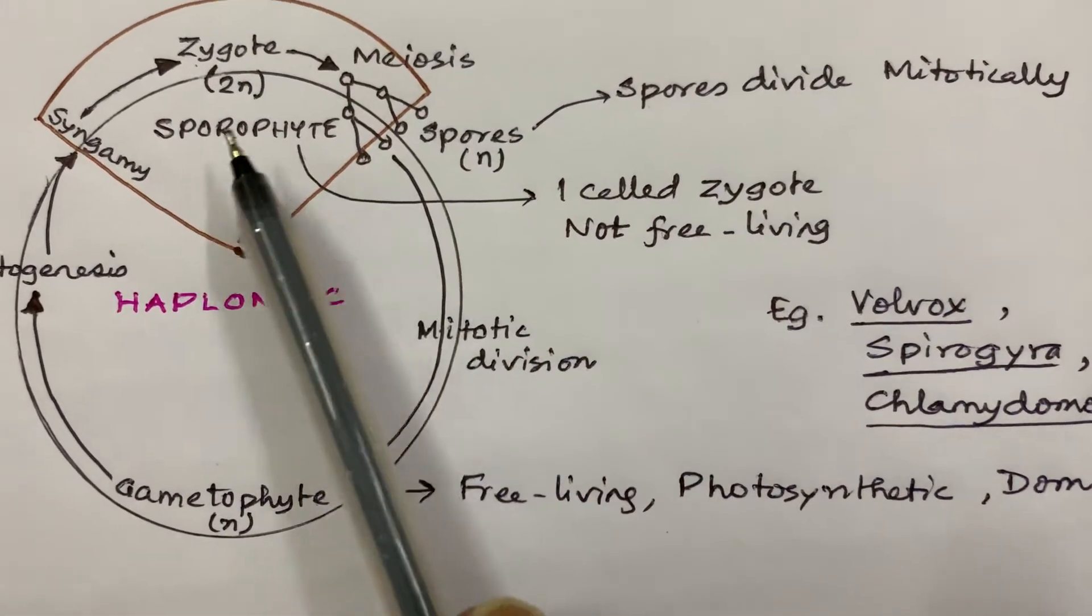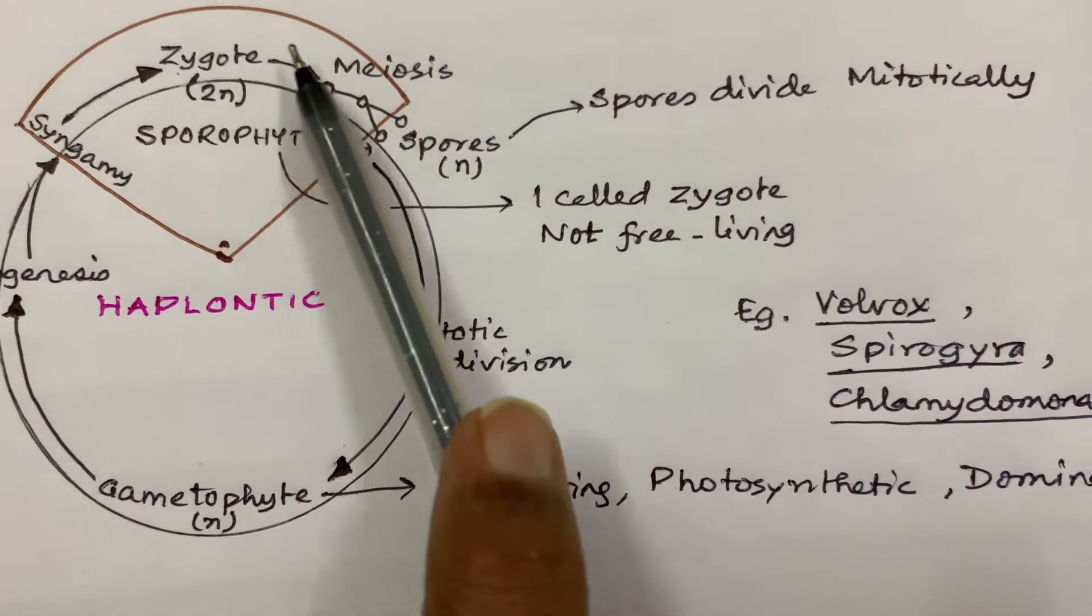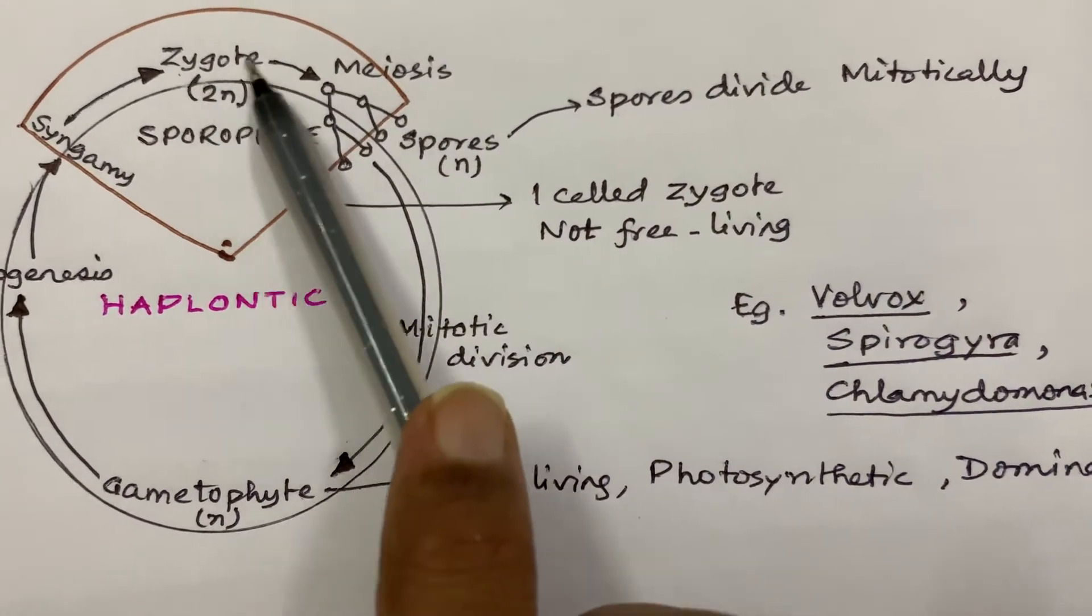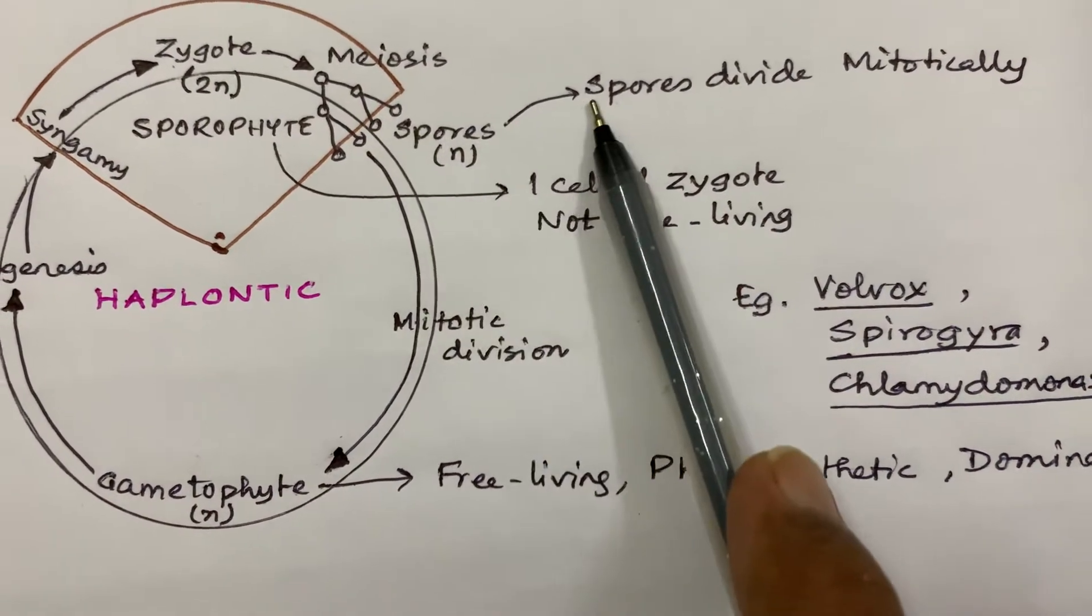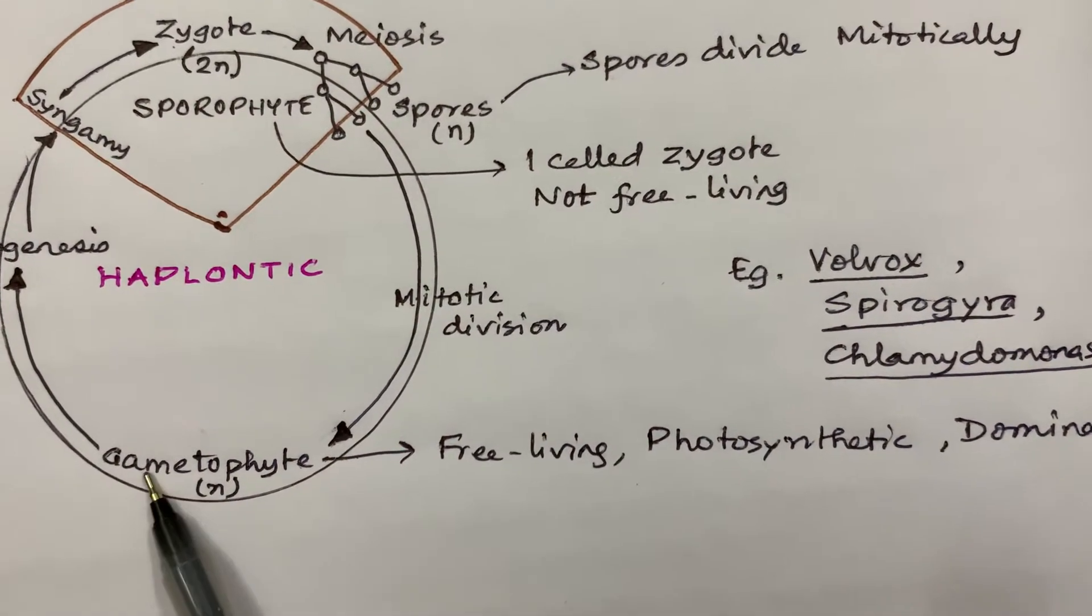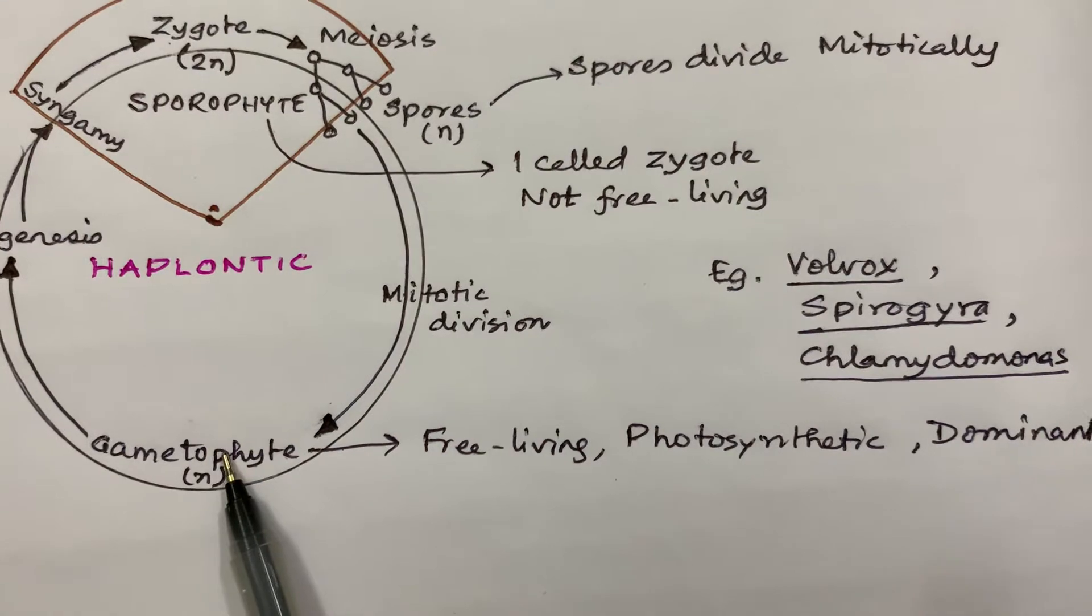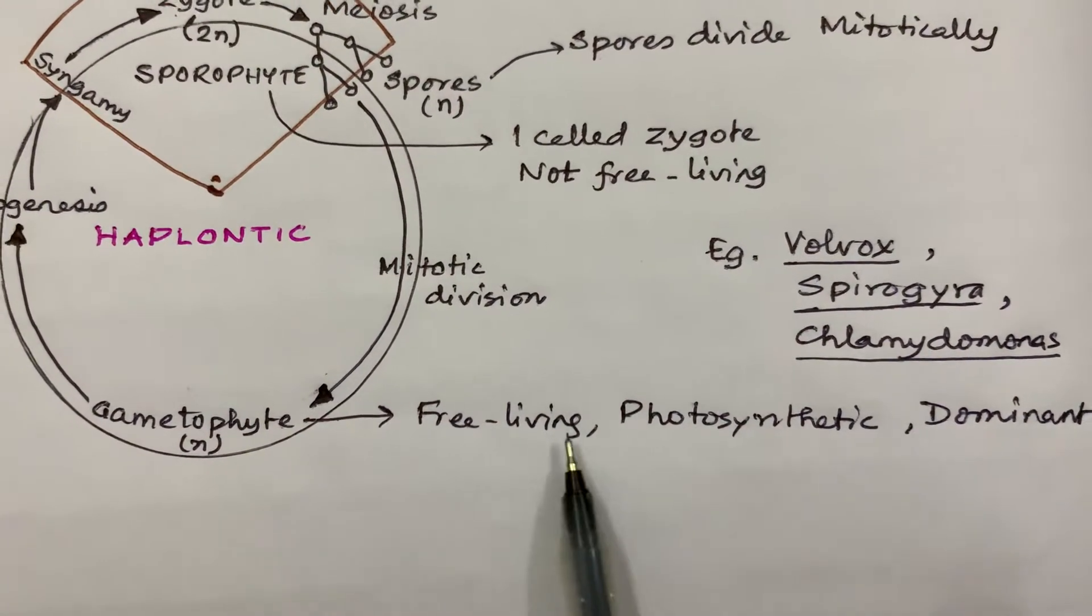The spores are formed by meiosis from the zygote, and later on these spores divide mitotically. They undergo mitotic division to form a gametophyte.